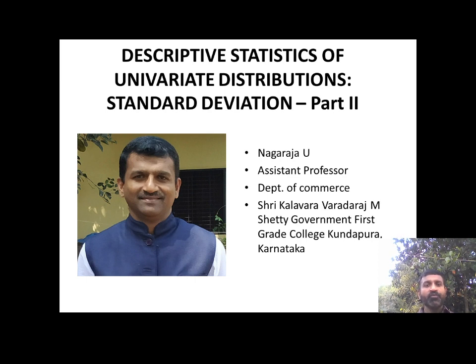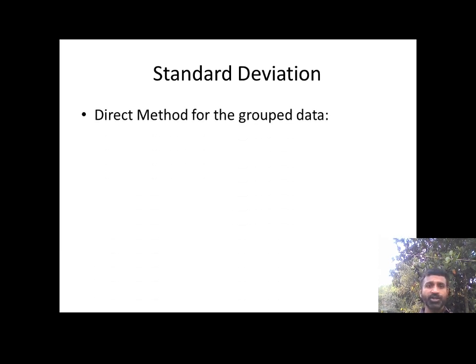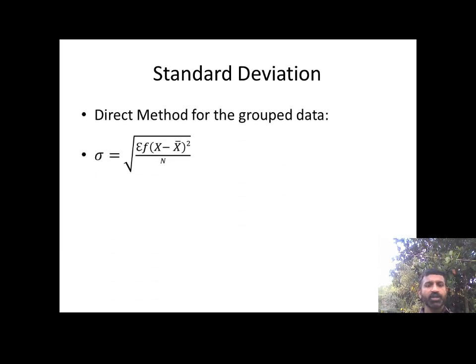Let me first explain the formula to be used under the direct method for the computation of standard deviation for the grouped data. Sigma is equal to the square root of the sum of f into (x minus x-bar) whole square, divided by N.